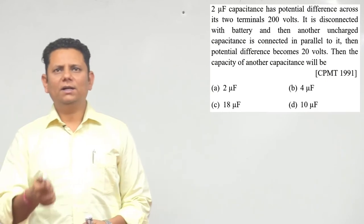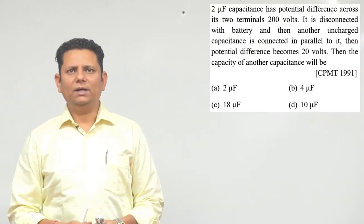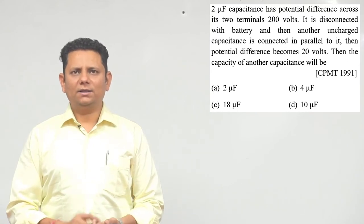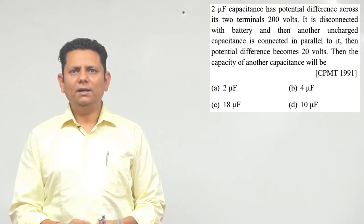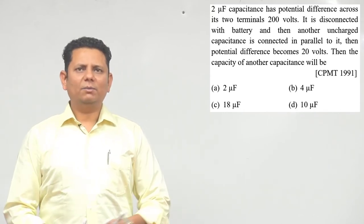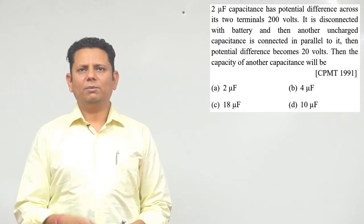Next question says: a 2 microfarad capacitor has potential difference across its terminals of 200 volts. It is disconnected with battery and then another uncharged capacitance is connected in parallel. Then the potential difference becomes 20 volts. The question asks: what is the capacity of the other capacitor?